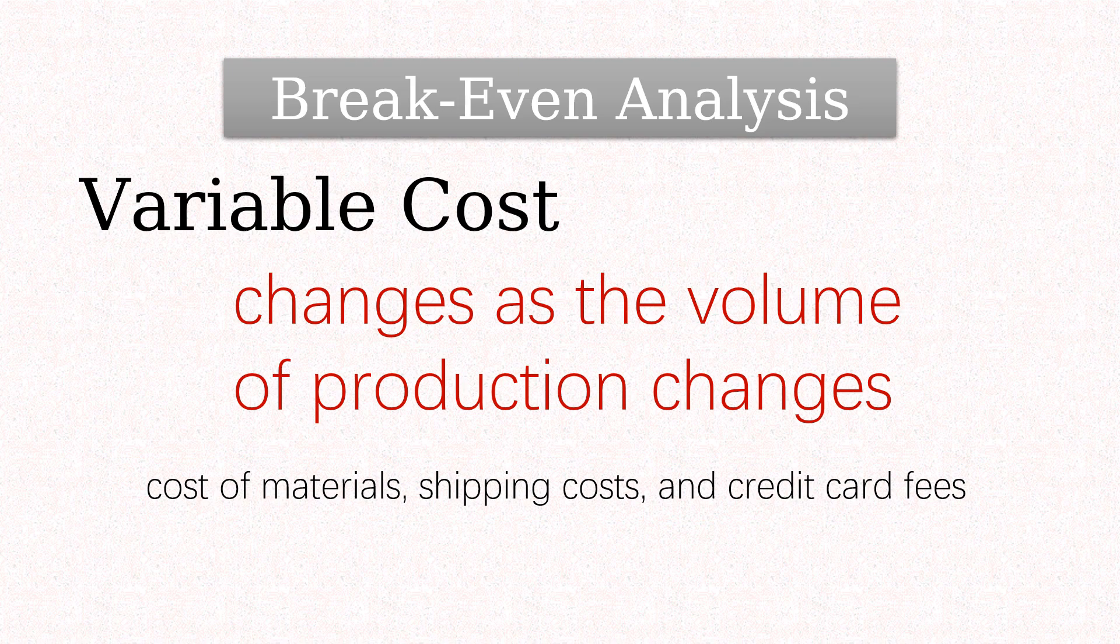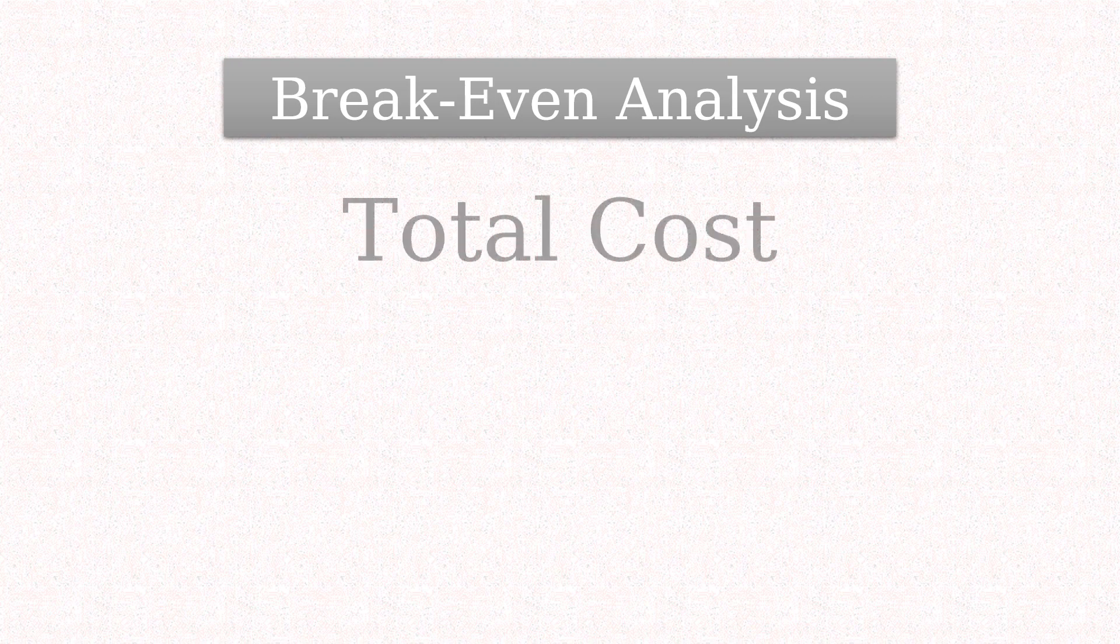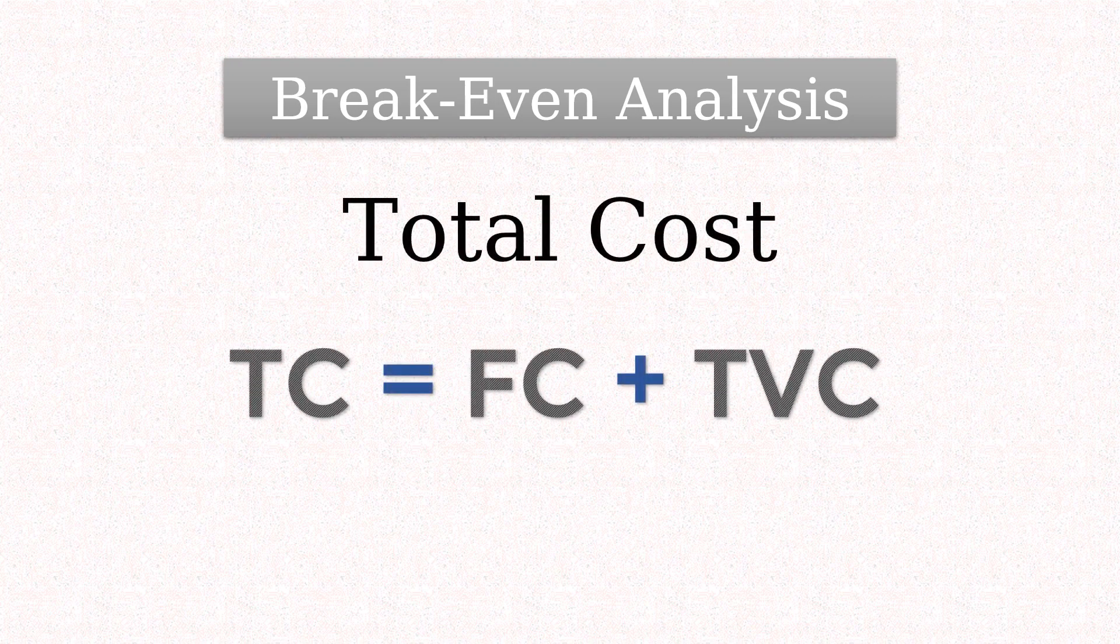We can now put the formula for total costs as the sum of fixed costs and total variable costs.